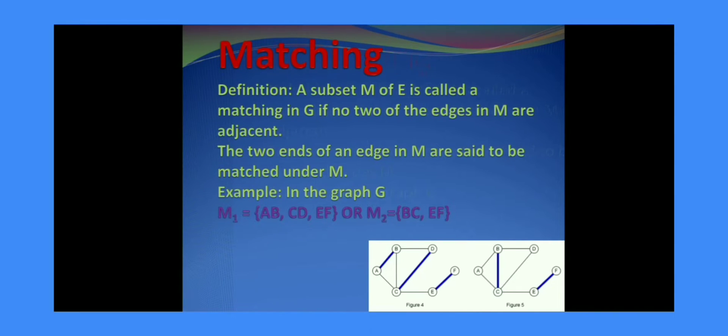Consider the example. We have established two kinds of matchings. The first matching M1 is AB, CD, EF. What about the second one? BC and EF.